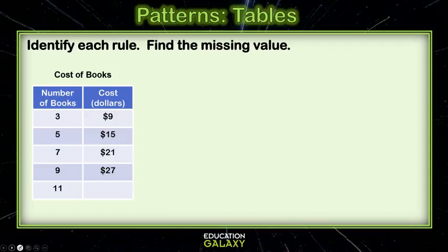Let's try multiplication. To get from 3 to 9, I could multiply by 3. And then, 5 times 3 would give me 15. And, 7 times 3 would give me 21. And, 9 times 3 would give me 27.